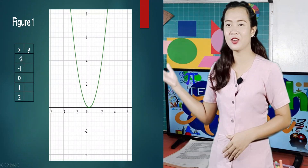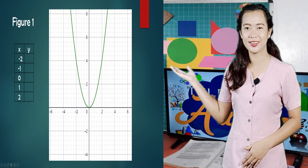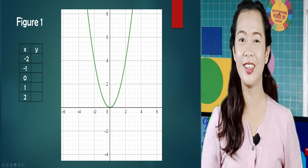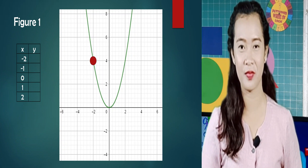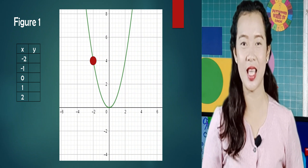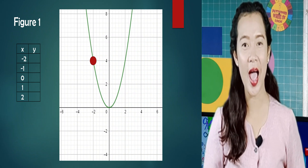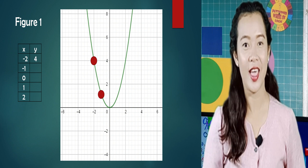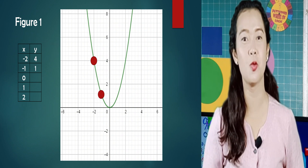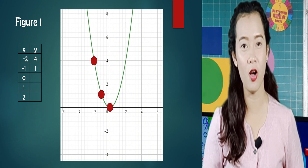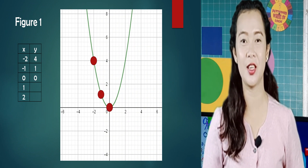Let's study the graph in Figure 1. What will be the values of y in the table if x is negative 2, negative 1, 0, 1, and 2? If x is negative 2, y is 4. If x is negative 1, y is 1. If x is 0, y is 0.